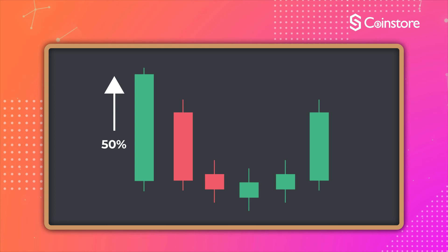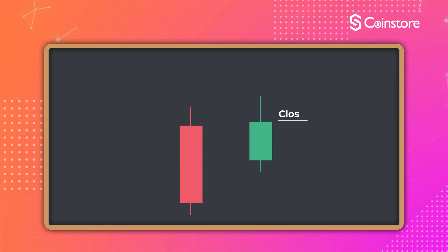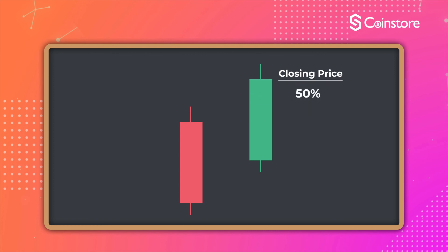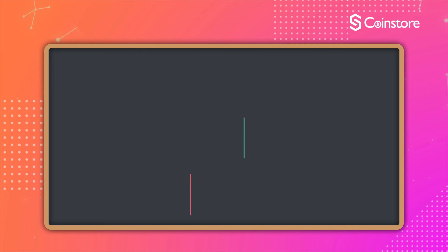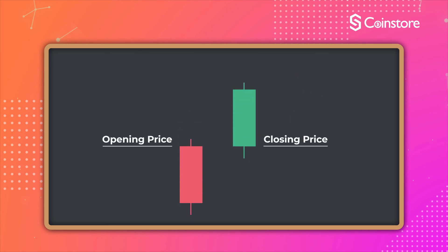Through this, we are able to judge the bullish strength by the position of the closing price of the previous green candle. If the closing price of the green candle exceeds the previous long red candle by 50%, this signifies a relatively weak bullish strength. If the closing price of the green candle is equal to the opening price of the previous red candle, this signifies a stronger bullish strength.